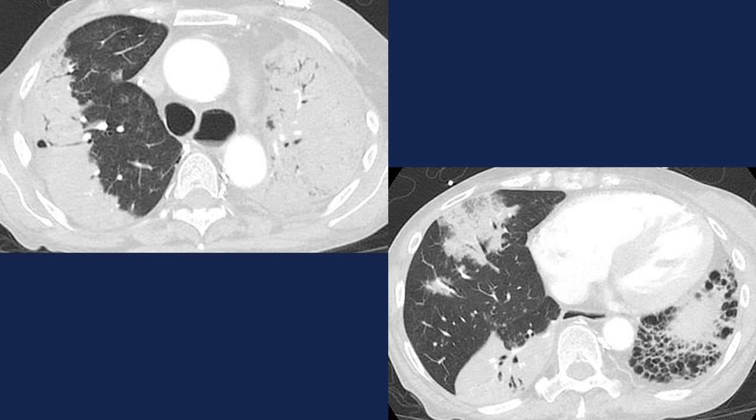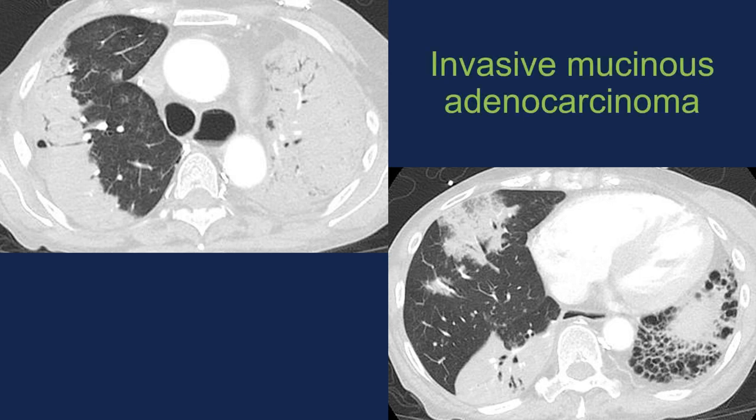But when consolidation is asymmetric, patchy, irregular, or mass-like, always think about primary pulmonary malignancies — and in this case, invasive mucinous adenocarcinoma of the lung. We're going to talk about the unique features of this tumor, particularly with respect to CT imaging.